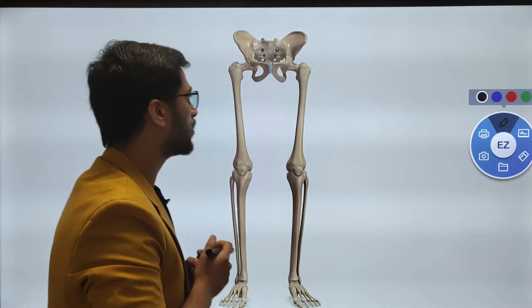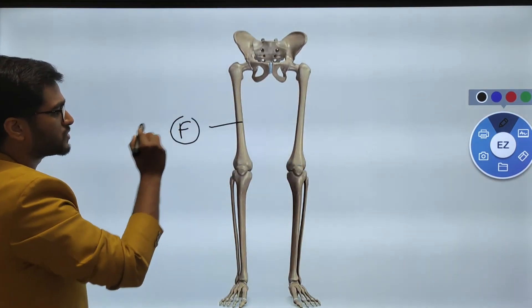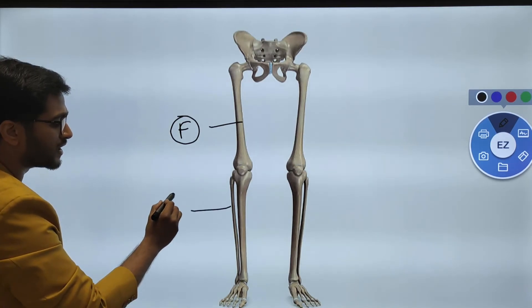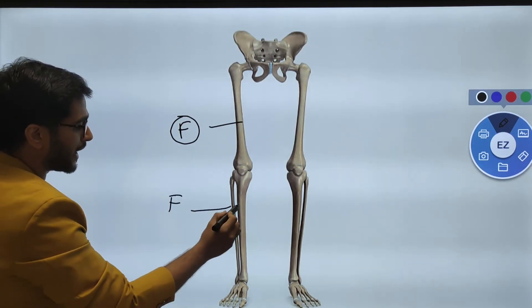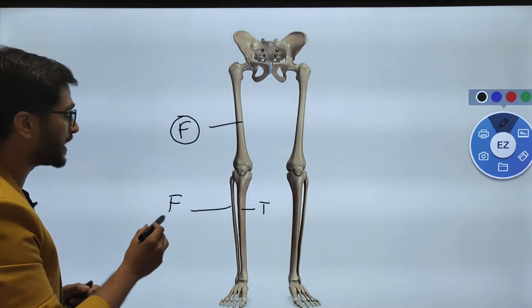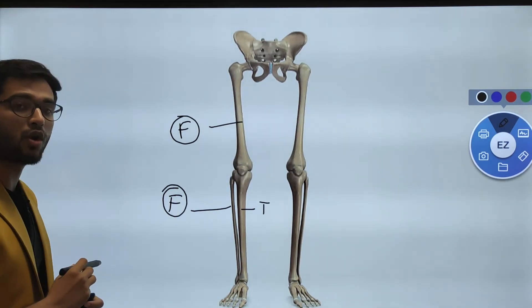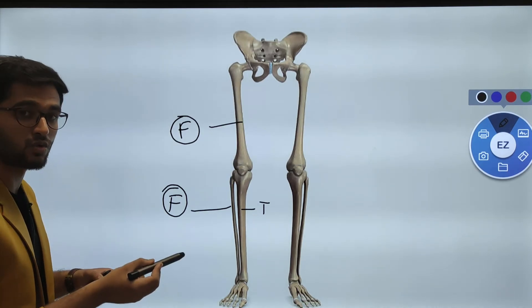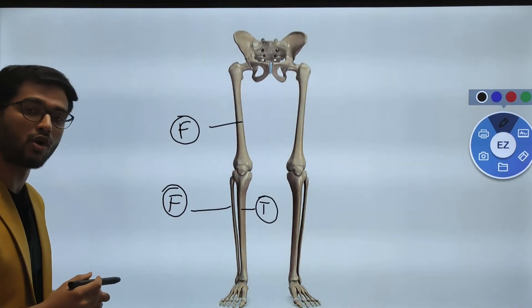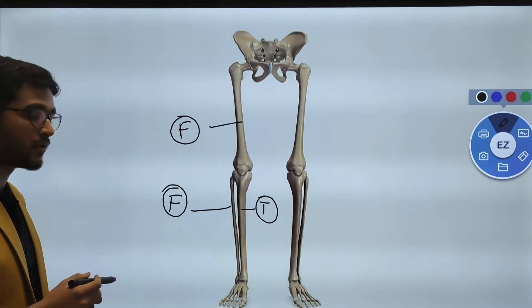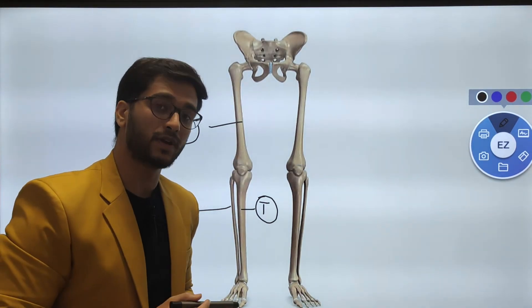The lower limb consists of 62 bones, divided into 31 on each side. Among this 31, one bone is of the pelvic girdle and 30 are the lower limb bones. In the lower limb, we find the longest bone of the body, known as the femur. The lateral bone is the fibula and the middle one is the tibia. The fibula is homologous to the radius as both are lateral bones, while the tibia is homologous to the ulna, as both are medial bones.